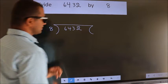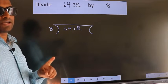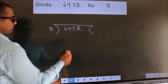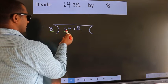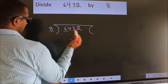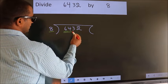This is your step 1. Next, here we have 6, here 8. 6 smaller than 8. So, we should take 2 numbers, 64.